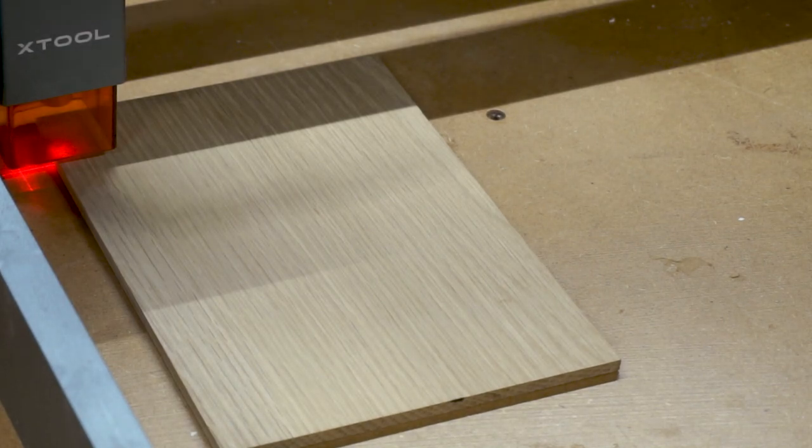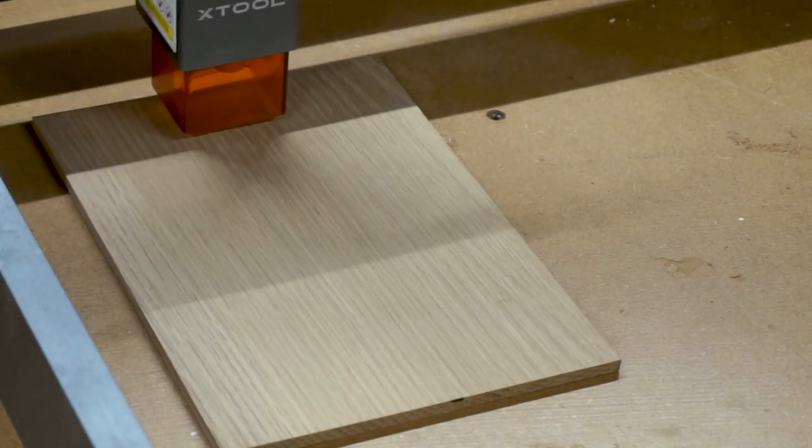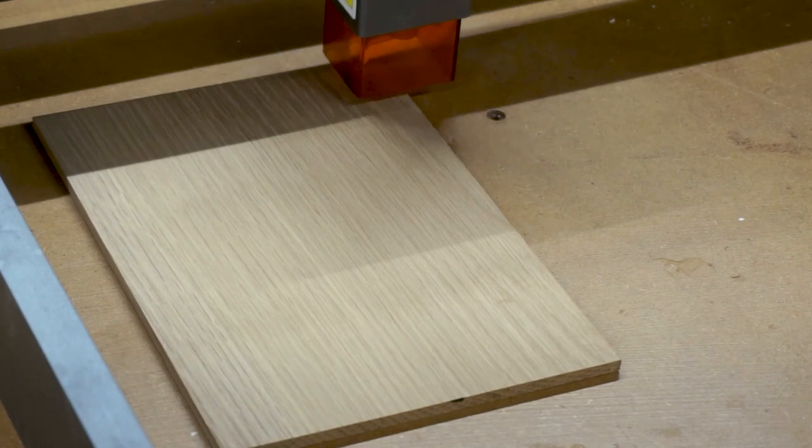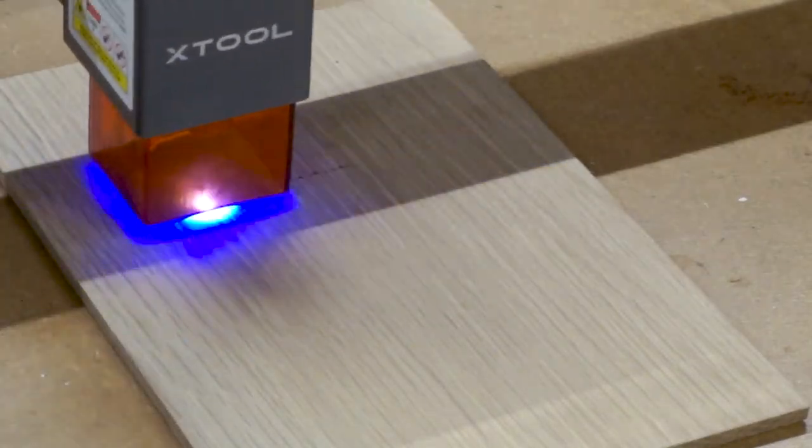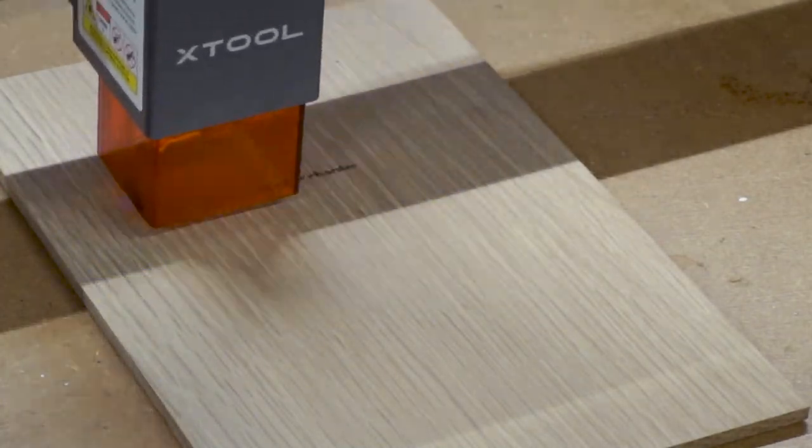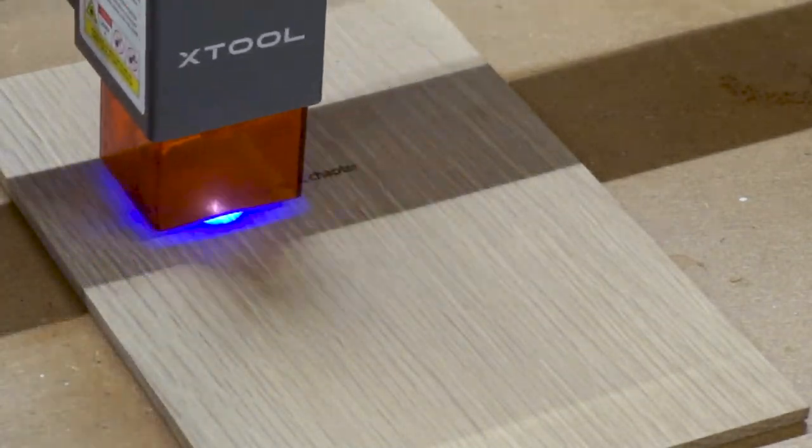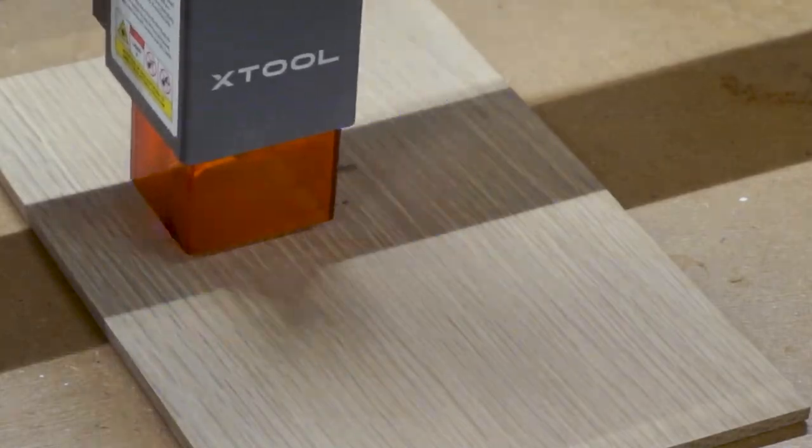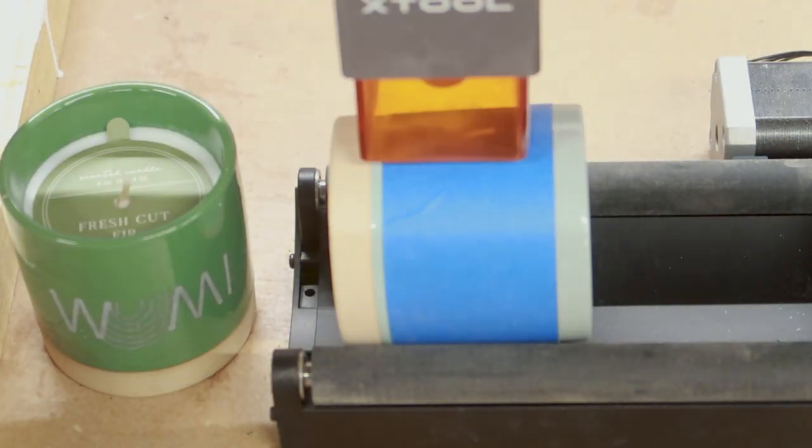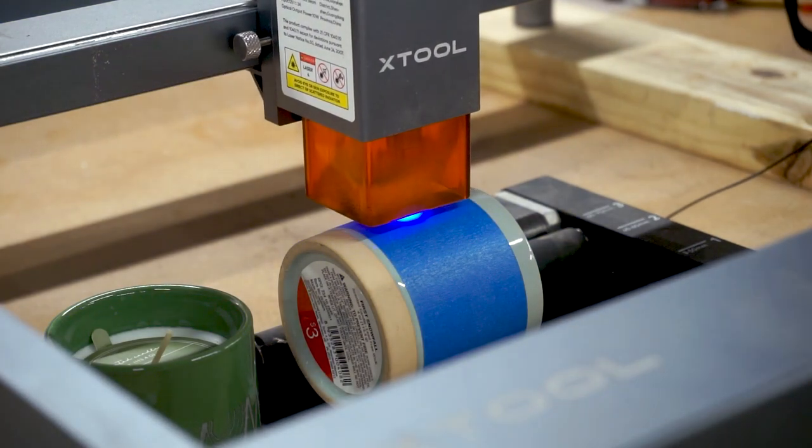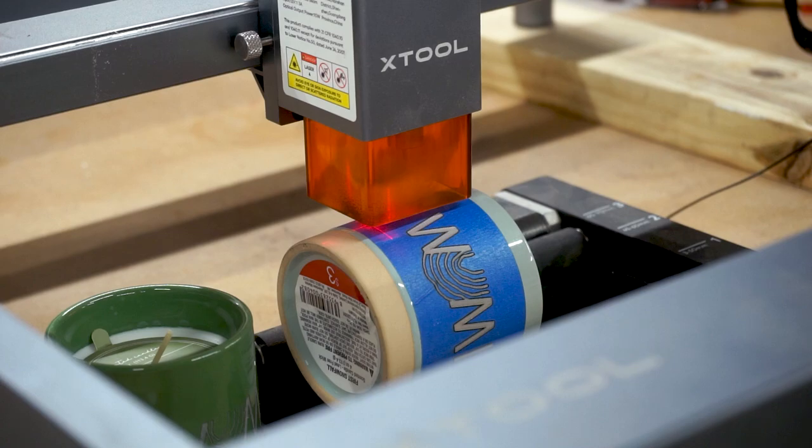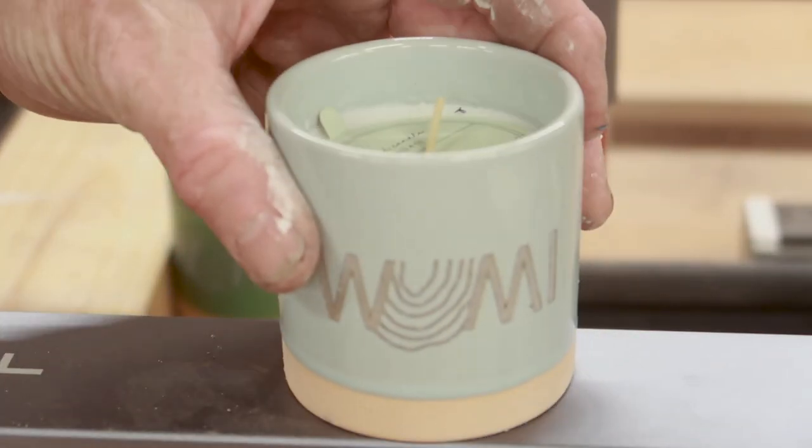Alright so now we're ready to do the back cover. And while we're burning the back cover I'll show another candle that I burned that's a different color. And the rotary tool was pretty easy to use. All I did was plug it in and then when I went to do the burning it asked me are you using the rotary tool? And when you answer yes it figures everything out. And it also turned out pretty nice.